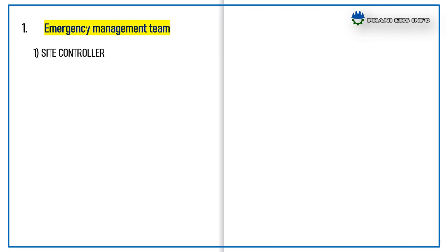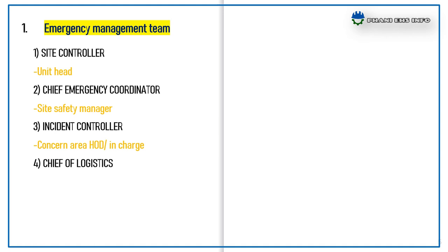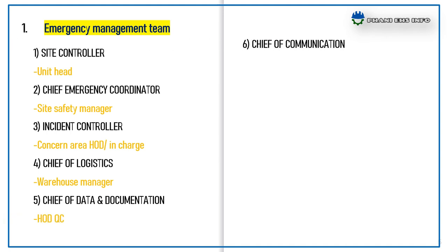This team includes the Site Controller, meaning the Incident Unit Head; Chief Emergency Coordinator; Site Safety Manager; Incident Controller; Concerning Area and HBOD in charge, where the incident has happened; and Chief of Logistics from the Warehouse; Chief of Data and Documentation from HBOD of QC; and Chief of Communication.